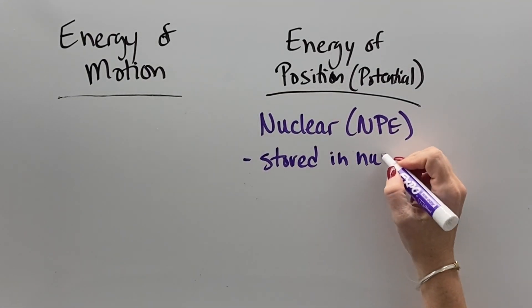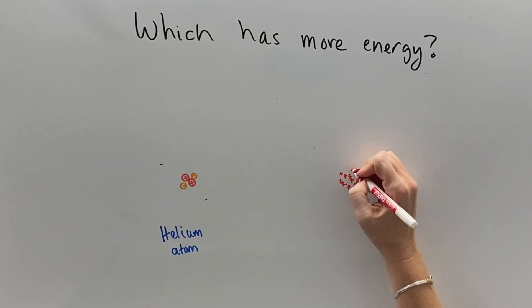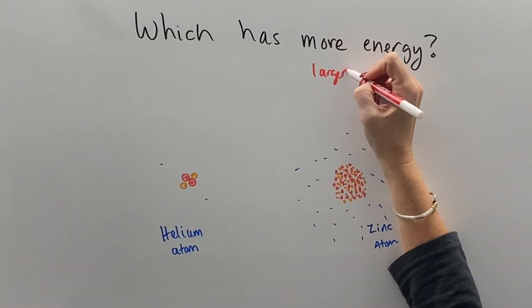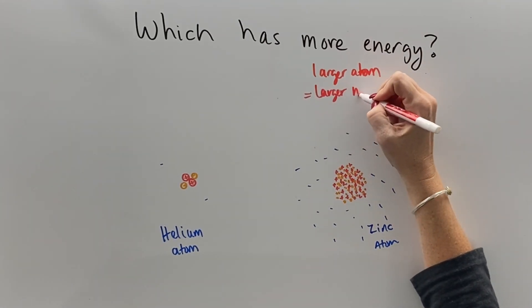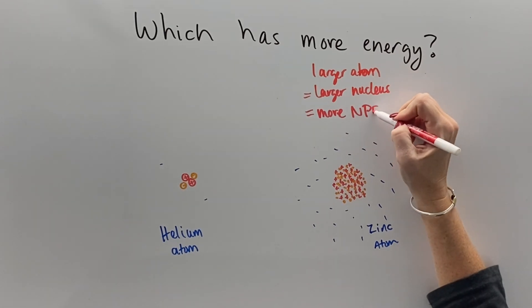With nuclear potential energy, the energy is stored in the nucleus of an atom, and so helium atoms have a very small nucleus, whereas something like a zinc atom would have a larger nucleus. And so because there's more particles in a zinc atom, a larger atom has more energy stored in the nucleus, therefore more nuclear potential energy.